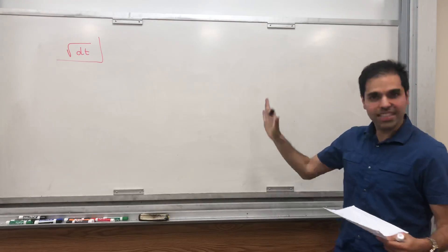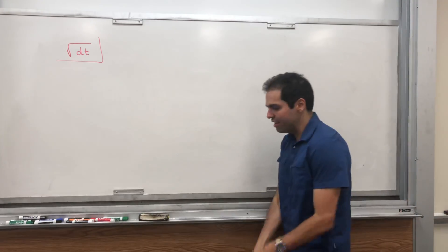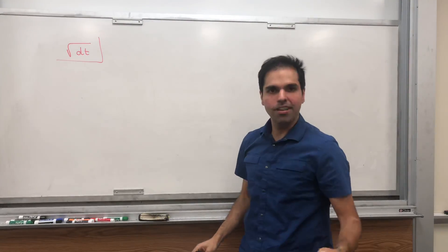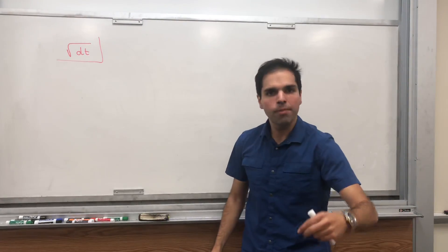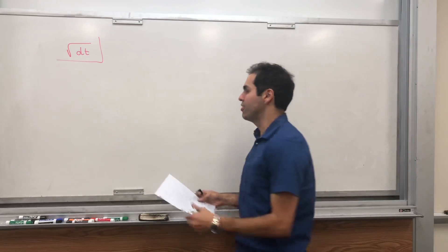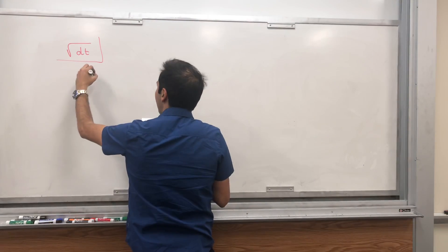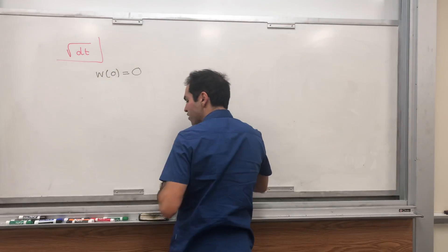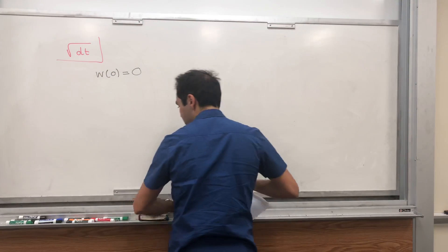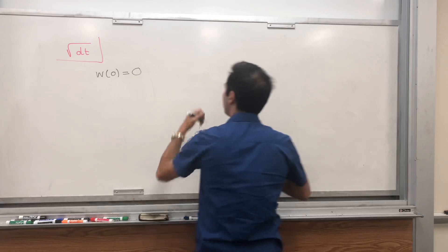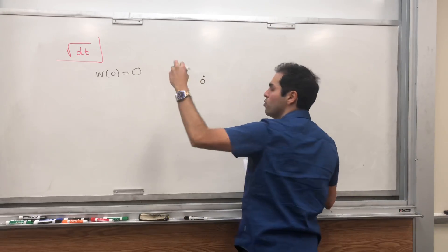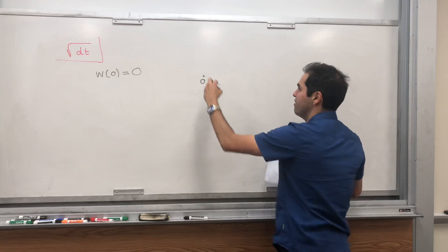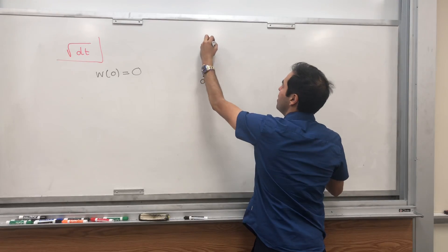So again let's take Brownian motion as a given. In case you don't remember, it's a stochastic process, which means for every time we have a random event — so a random variable — with the following properties. We have initially the Brownian motion starts at zero. You start at zero and then if you roll your die you get at every time a different event, so a different path. Let's say W_t.